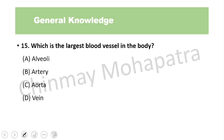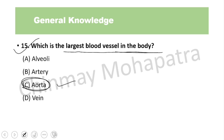Question number 15: Which is the largest blood vessel in the body? The aorta is the largest blood vessel. It carries blood from the left ventricle and supplies it to different parts of the body.